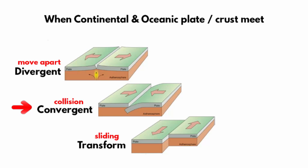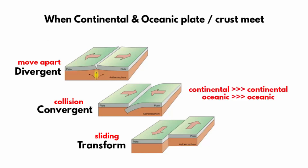Several events can occur at a convergent boundary. The collision can occur between two continental plates, two oceanic plates, or between an oceanic plate and a continental plate.